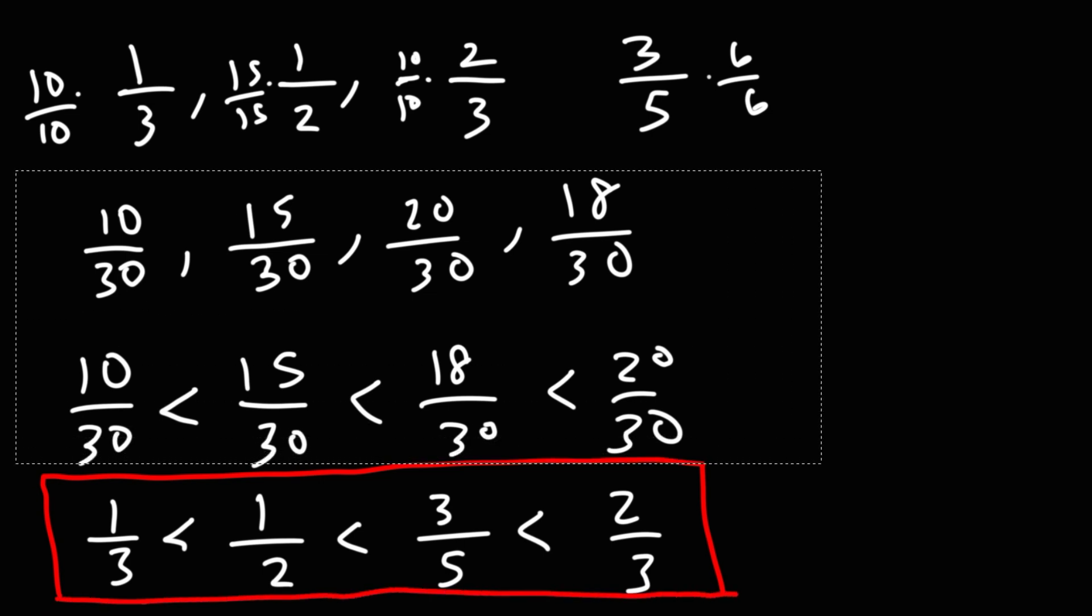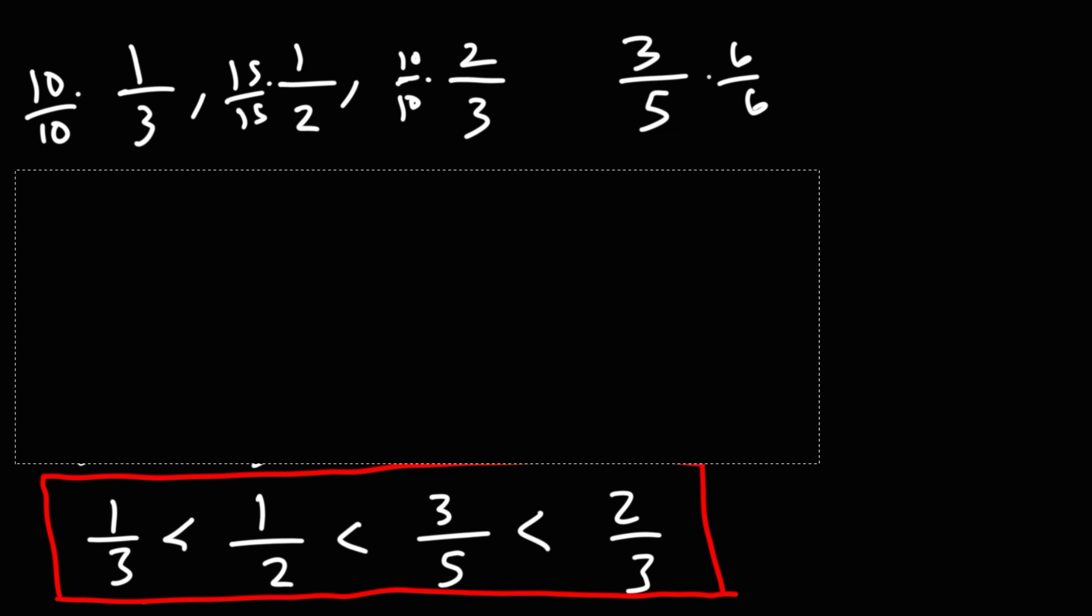If you want to confirm the answer, what you could do is, using a calculator, you can convert each fraction to a decimal. 1 over 3 is 0.3 repeating, or 0.333. 1 half is 0.5. 3 over 5 is 0.6. And 2 over 3 is 0.6 repeating.